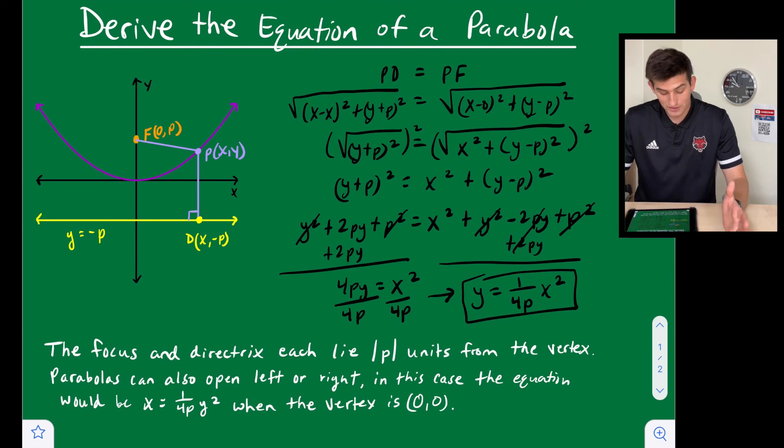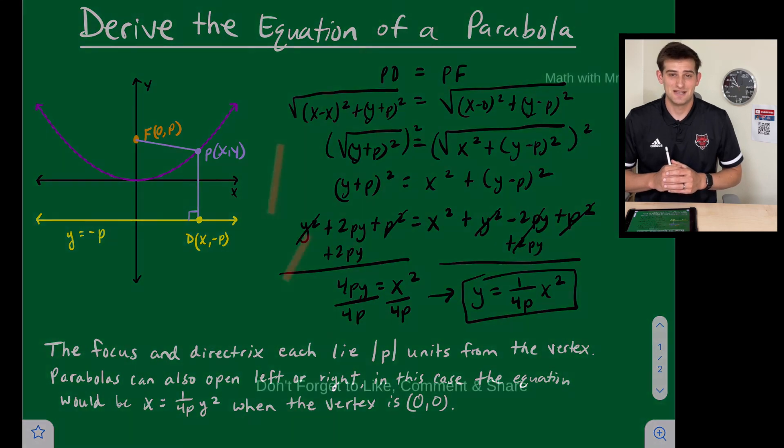Parabolas can also open left or right. So we said in this video this is about a parabola that's going to open up or down. In this case, the equation would be x = 1/(4p) × y² when the vertex is at the origin. So if we have a parabola that opens left or right, all we have to do is switch x and y and we use the same equation. And so that's how you can derive the equation of a parabola when its vertex is at the origin.